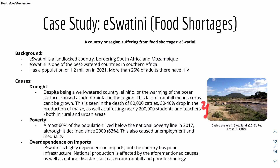Statistics show significant impacts from drought including cattle deaths and drops in maize production, affecting students and teachers in both rural and urban areas. About 60% of the population lived below the national poverty line in 2017, though this declined since 2009. Poverty caused unemployment and inequality. East Eswatini is also highly dependent on imports due to being landlocked, but has poor infrastructure. National production is further affected by erratic rainfall and poor technology.